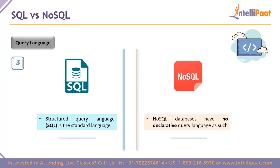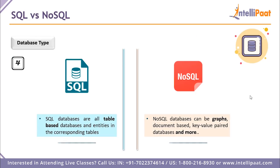On query languages: SQL already stands for Structured Query Language and is the standard language for SQL databases. NoSQL databases have no declarative query language as such. On database type: SQL databases are table-based — tables form the backbone — and every item on a table forms a vital part of that database. NoSQL databases include a variety of types: graph databases, document-based databases, key-value pair databases, and more.